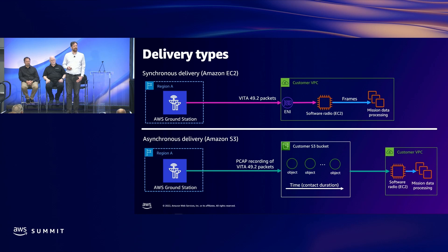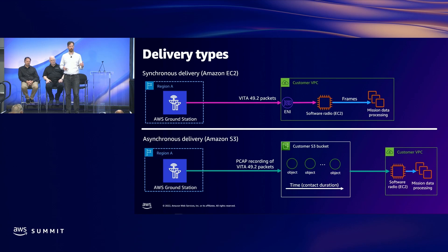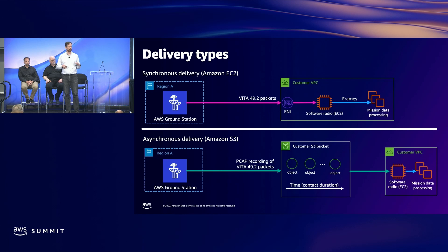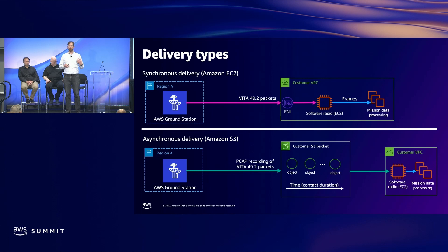How does the data actually get into your cloud environment? There are two different delivery types: synchronous delivery and asynchronous delivery. In synchronous delivery — valid for both demodulated frames and DigIF digitized waveform — we deliver the data to you over the network in your VPC, a private network you can configure and control in the AWS environment. The delivery format is a UDP protocol called Vita 49.2, a standard that captures useful metadata about radio configuration and channels. AWS Ground Station creates a network interface in your VPC, and in your mission profile you configure a target for data delivery.